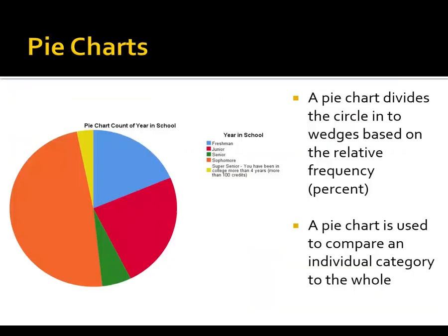Now let's take a look at some graphics. The first graphic is the pie chart, which is a graphical representation of the relative frequency — typically the percentage — making each wedge proportional to its share of the whole. Freshmen were about 18.5%, so that wedge represents that portion. The purpose of a pie chart is really to compare an individual category to the whole unit. We had 443 students surveyed, and we can compare the 82 freshmen to the whole group. A pie chart is used to compare an individual to the whole.